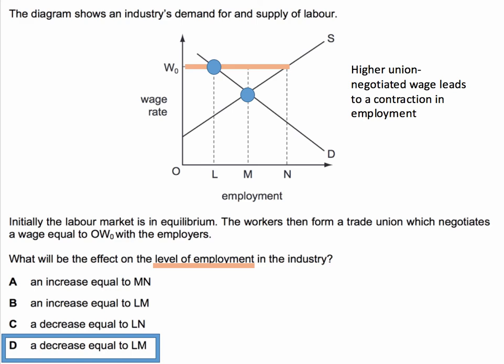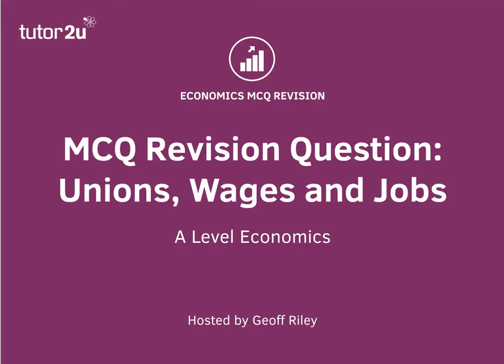Of course, the higher wage could cause a rise in unemployment — excess supply of labour equal to LN. But that's not what the question is asking. It's quite specific: it's about the level of employment. One of those multiple choice questions that on the surface is quite straightforward, but if you read the question carefully, that will get you to the right answer. And I hope you found it.